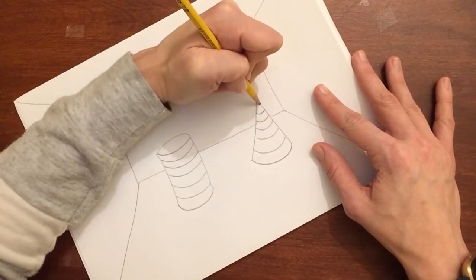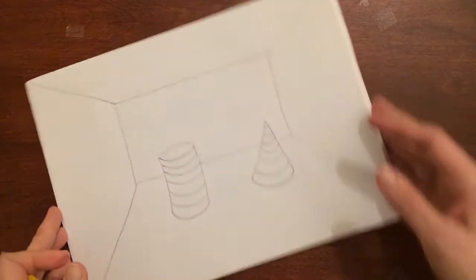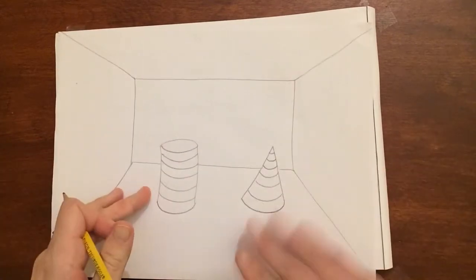Shapes are two-dimensional. Once they become three-dimensional we call them forms.